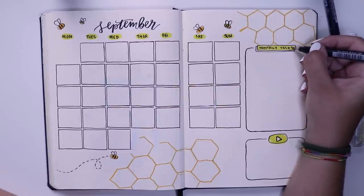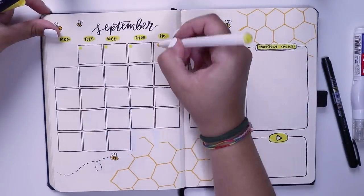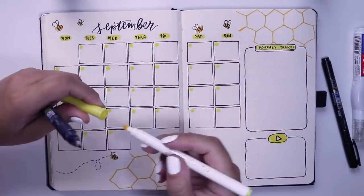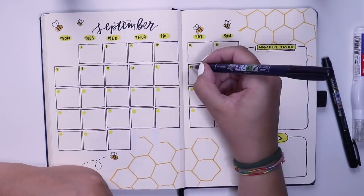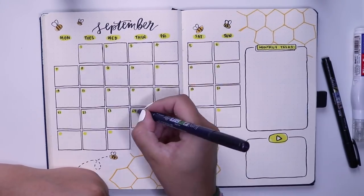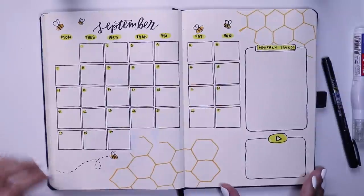That was pretty much it for my monthly spread. I just went in with my Crayola Super Tip and added a little circle into every day of the month.